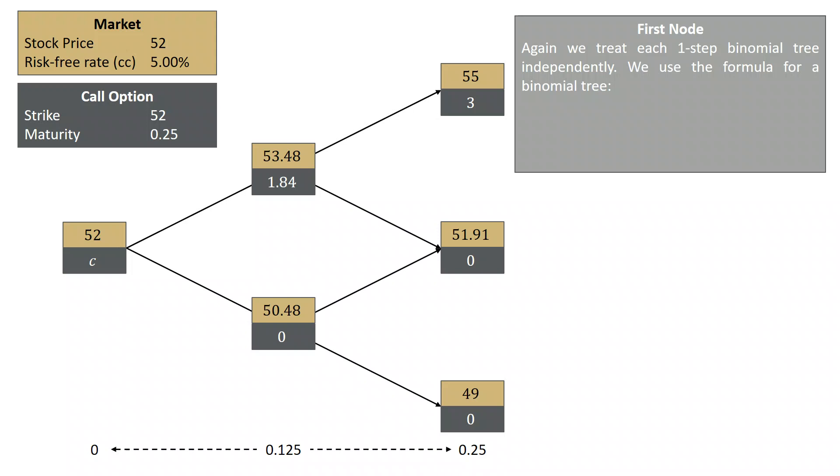Now we can do the same thing for the first node. So again, we can look at this as if we have a one-step tree going from 52 up to 53.48 or 52 down to 50.48. We use exactly the same formula: D equals P times DU plus 1 minus P times DD, e to the minus R delta T. And we find that the value of the option is 1.13. And so now we have priced on a two-step tree this call option with a strike of 52 and a maturity of a quarter of a year.